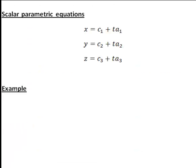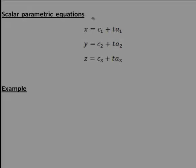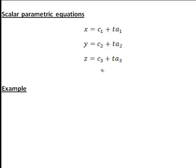The second way in which we can write the equation of a straight line is using its scalar parametric equations, where c1, c2, and c3 are the coordinates of a specific point on the line, a1, a2, a3 are the components of the vector in the direction of the line, and x, y, z represent the coordinates of a general point on the line. Once again, t can take any value, and different values of t give different points on the line.